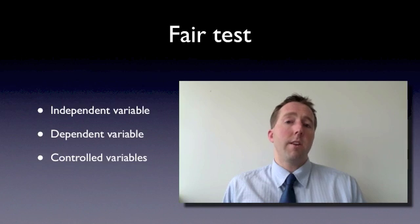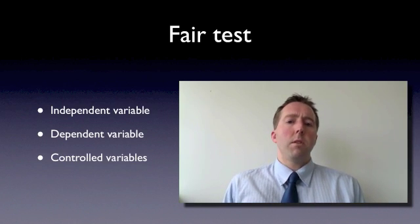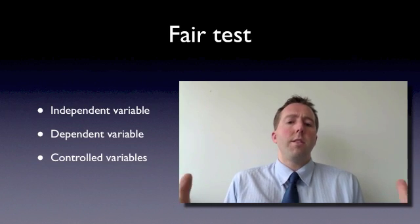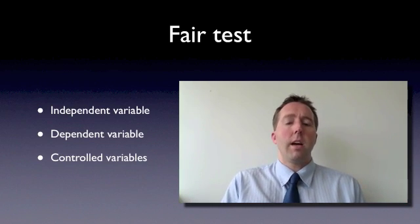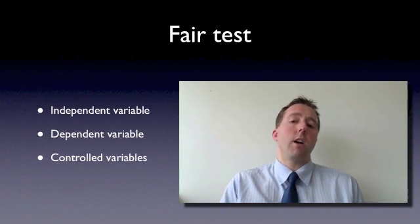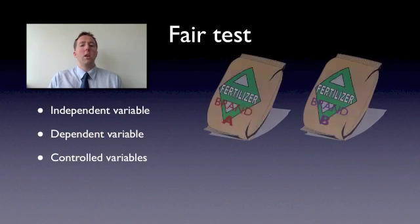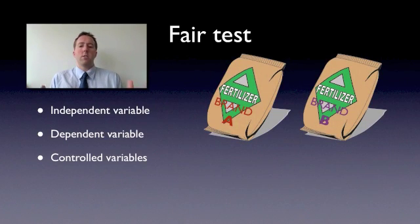There's an independent variable. The independent variable is the one that you want to change, the one that you do change. In our test, the independent variable, the thing we changed, was the type of fertilizer. Some of the plants we gave fertilizer brand A, and some we gave fertilizer brand B. That's a difference. It's a variable. That is the independent variable. It's the one that us as the scientist or experimenter, that's the one that we change.